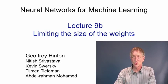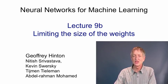In this video I'll talk about how we can control capacity by limiting the size of the weights. The standard way to do this is to introduce a penalty that prevents the weights from getting too large, with the implicit assumption that a network with small weights is somehow simpler than a network with large weights.